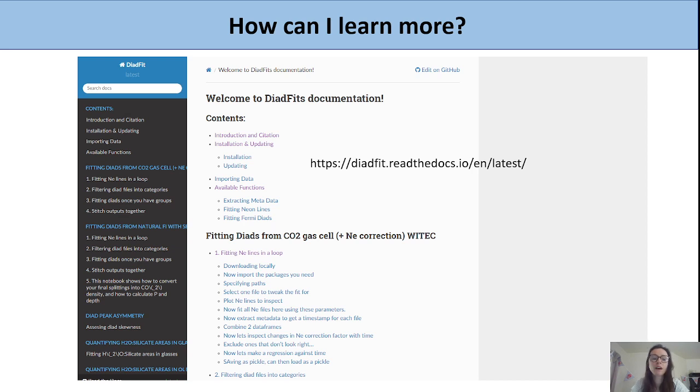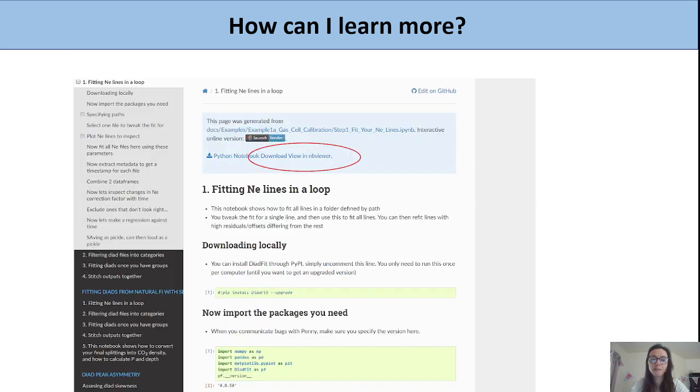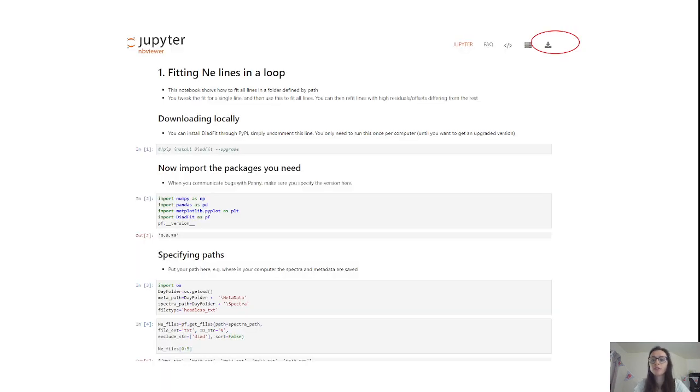For any workflow you're interested in, you can click on it and you'll get a Jupyter notebook. You can either read through this or click the download view in NB viewer button. This will launch it and you'll see a little download button on the right-hand side. You can download that and then you have the notebook which you can run on your computer and use to fit your spectra.